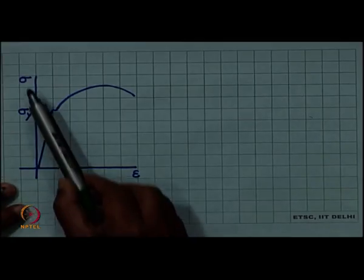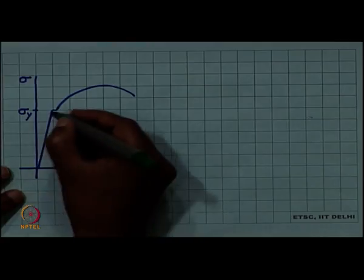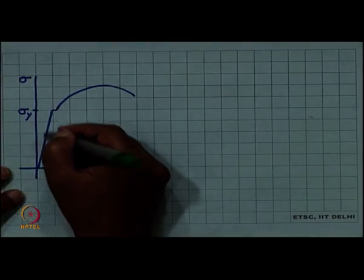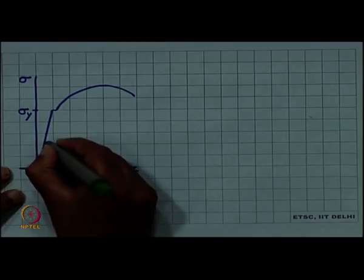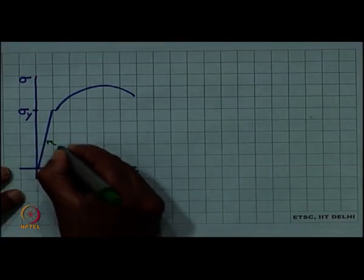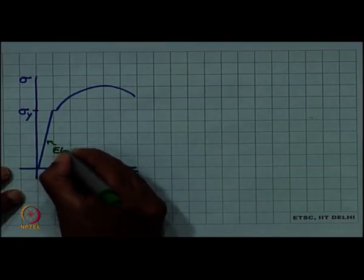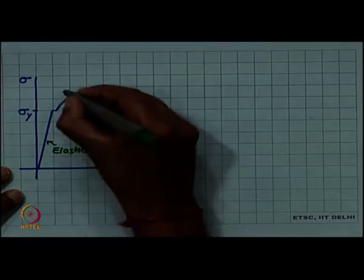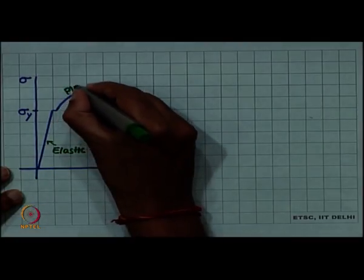If we plot the stress-strain curve of a ductile metal, then it shows a yield strength. Up to the yield strength the deformation was elastic, this part was elastic, but then plastic deformation happened.